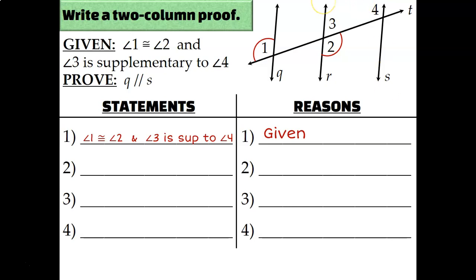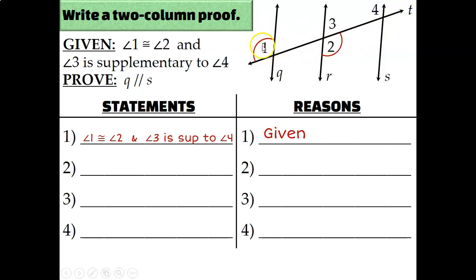For lines Q and S, I don't see any of those special kinds of pairs of angles. Instead, let's focus on line Q and line R. Angles one and two are alternate exterior angles because they're outside of the two lines we're trying to prove are parallel, and they are on opposite sides of transversal T. Since I have alternate exterior angles that are congruent, I can conclude that the lines are parallel by the alternate exterior angles converse.